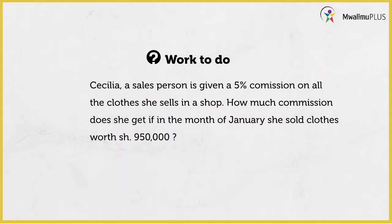At the end of the lesson, I left one question for you to attempt, and that is what we need to look at first before we continue. The question read: Cecilia, a salesperson, is given 5% commission on all the clothes she sells in her shop. How much commission does she get if, in the month of January, she sold clothes worth 950,000 shillings? That is what you call sales — she made a total sales of 950,000 shillings from the clothes.